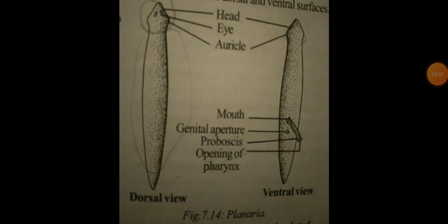For better understanding, referring to the figure showing both the dorsal and ventral views of Planaria: the anterior part includes the head, which is broad and pointed, whereas the posterior part is narrow and blunt. The head is triangular with a pair of lateral conical projections called auricles, visible in the dorsal view but obscured in the ventral view.